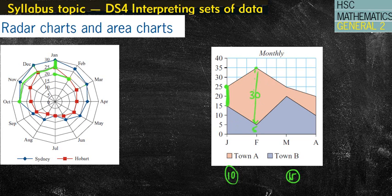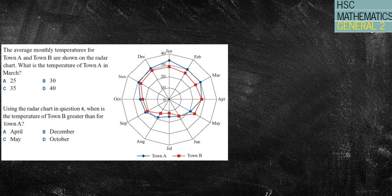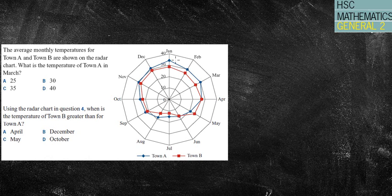We're going to do some questions. If you want to pause and have a crack, that's probably not a bad idea. The first question: the average monthly temperatures for Town A and Town B are shown on a radar chart. Town A is the blue diamond, Town B is the red square. What is the temperature of Town A in March? Blue diamond in March — I'm going to trace it back — and I get 30 degrees, which is answer B.